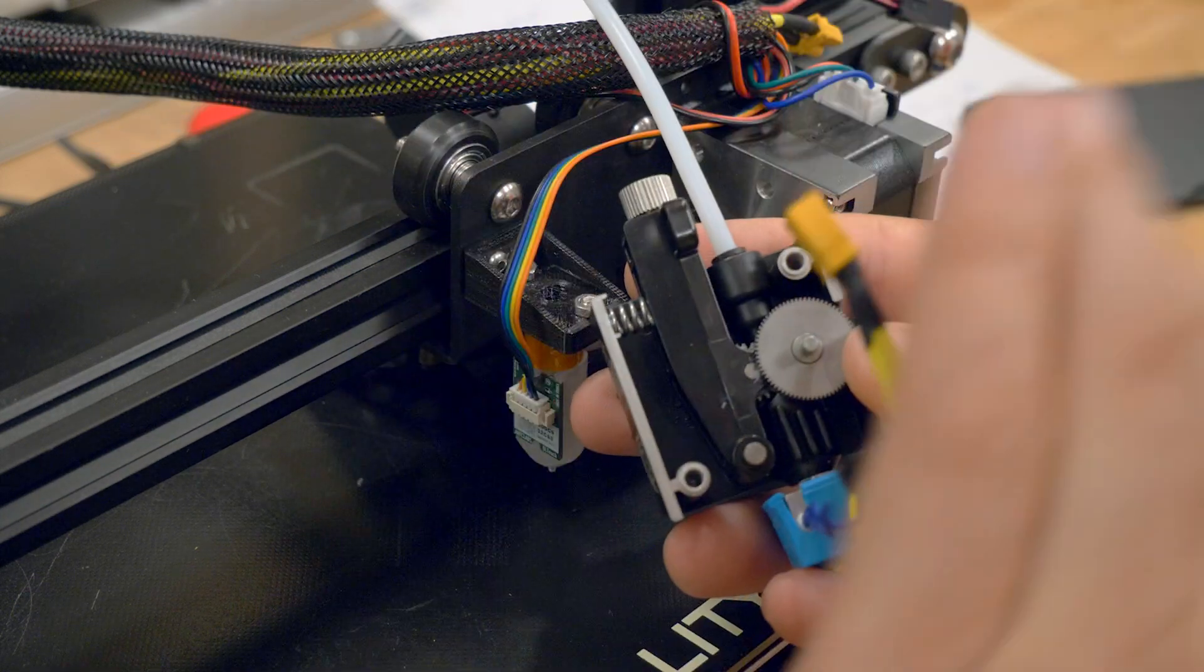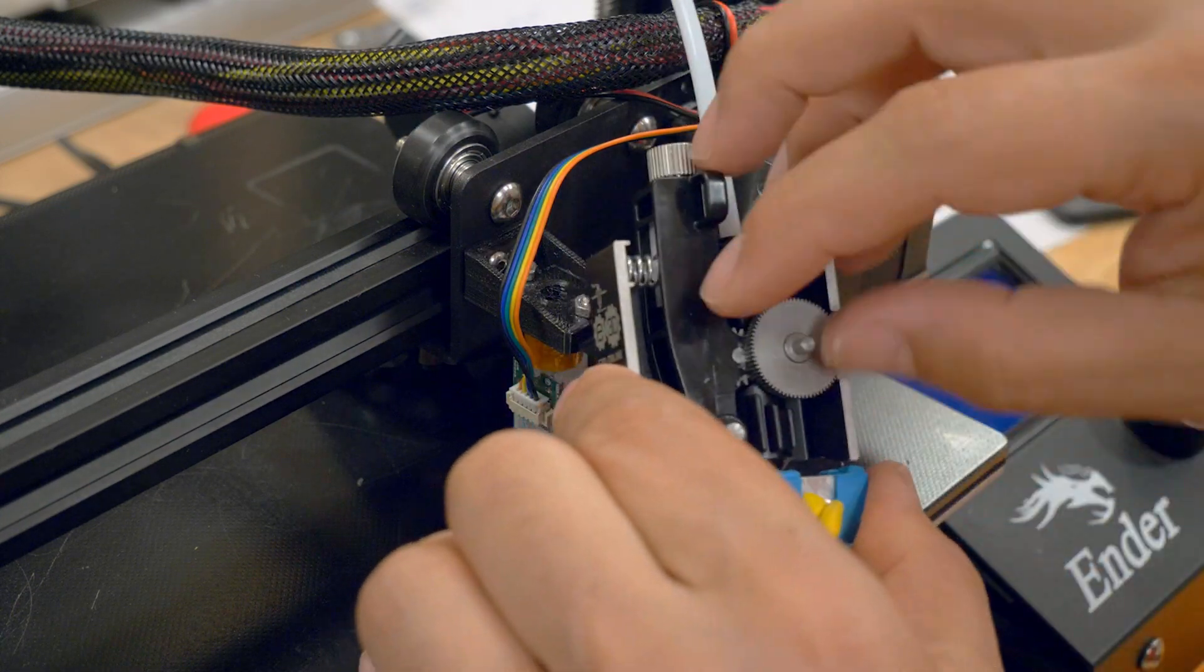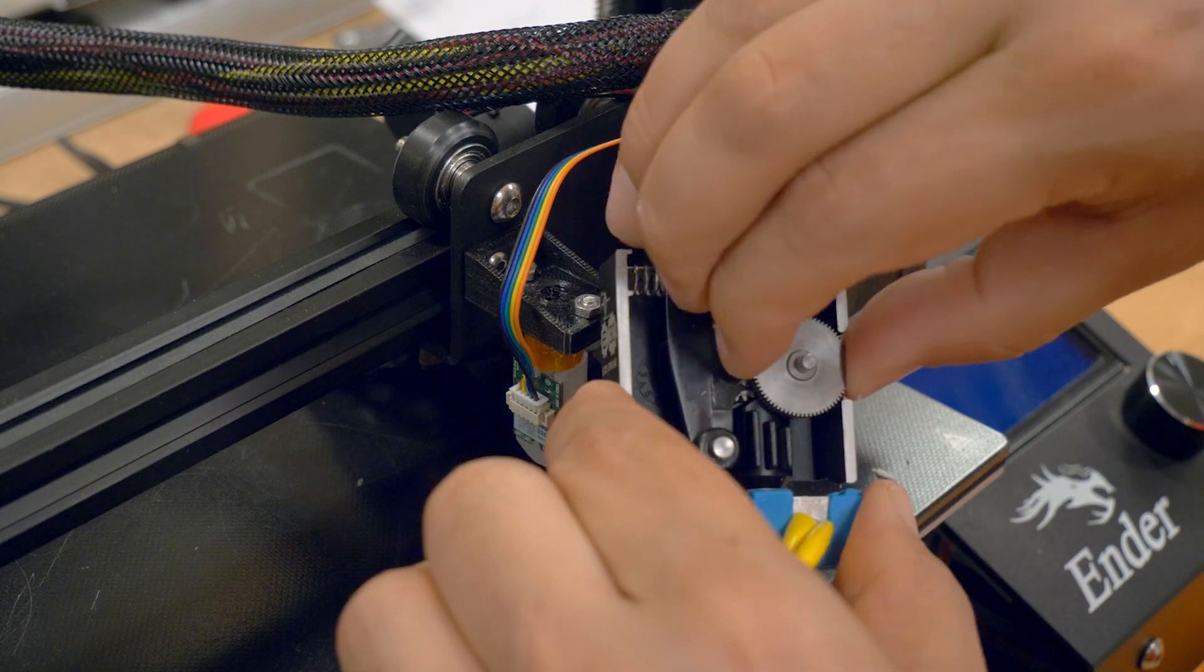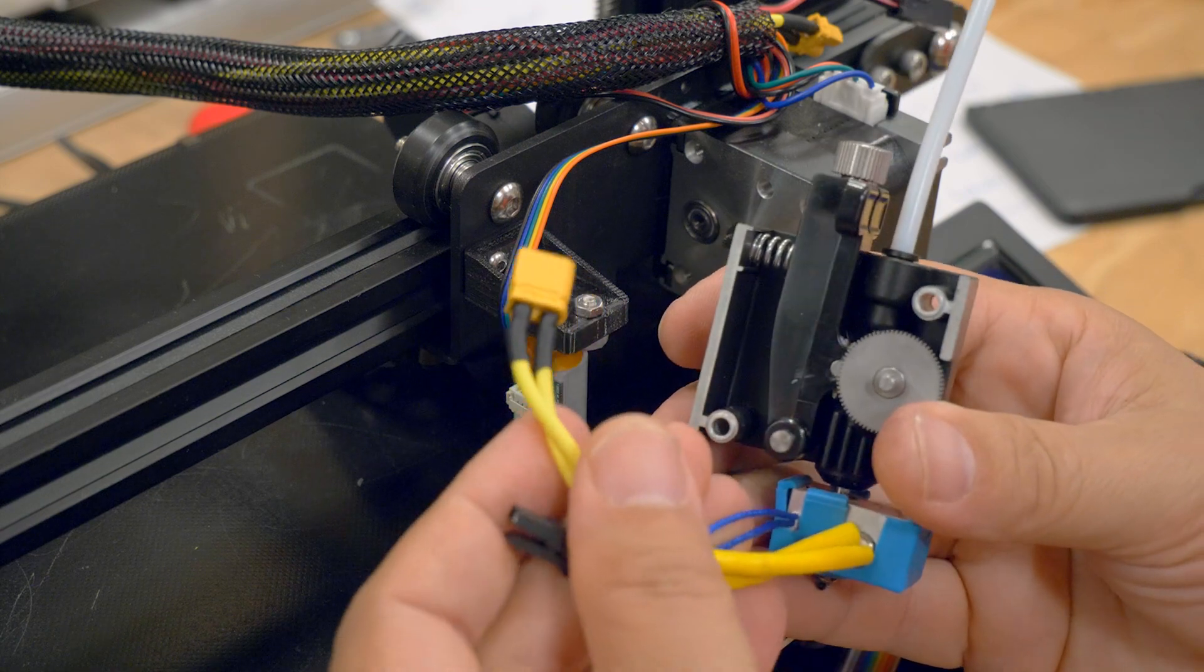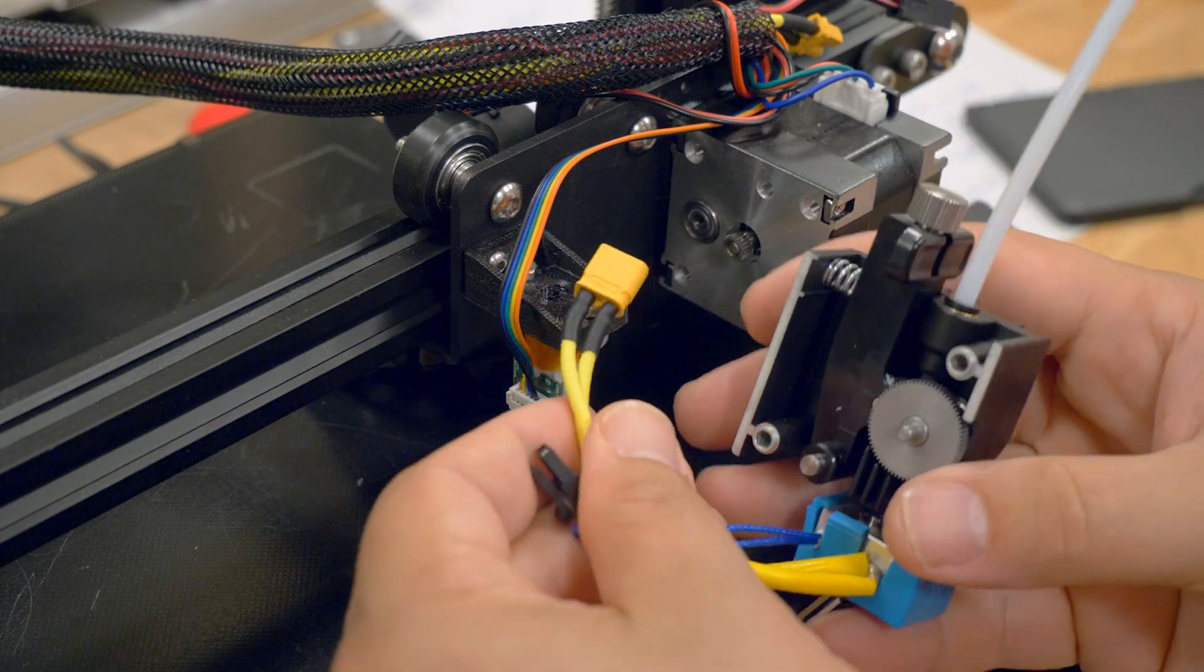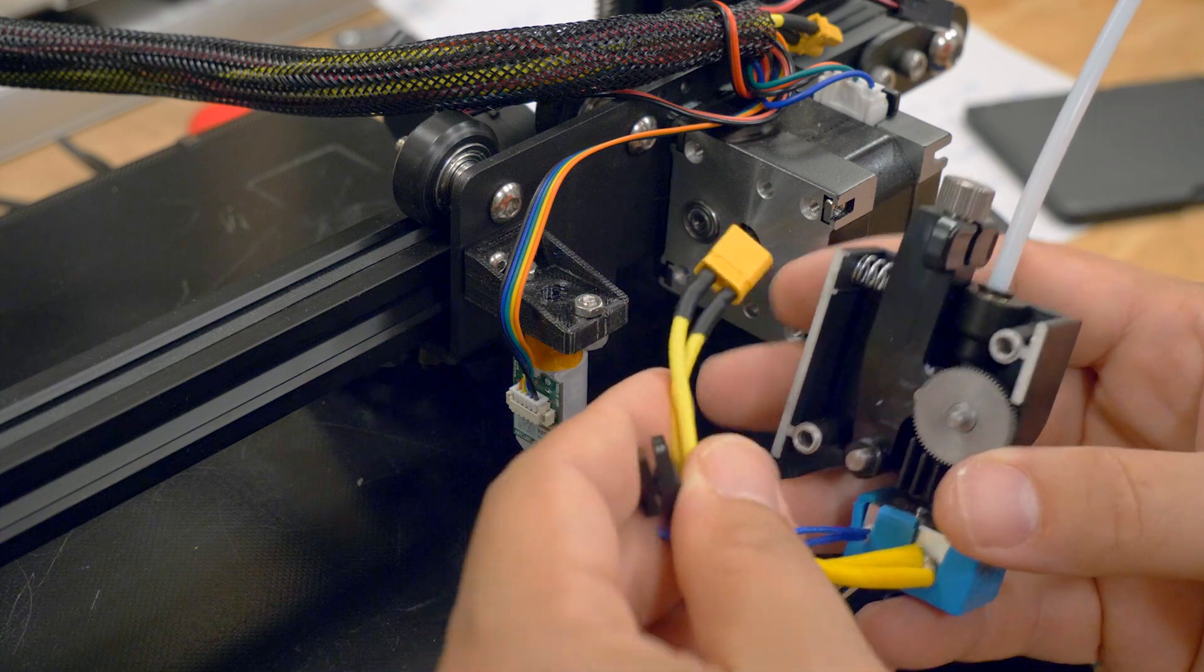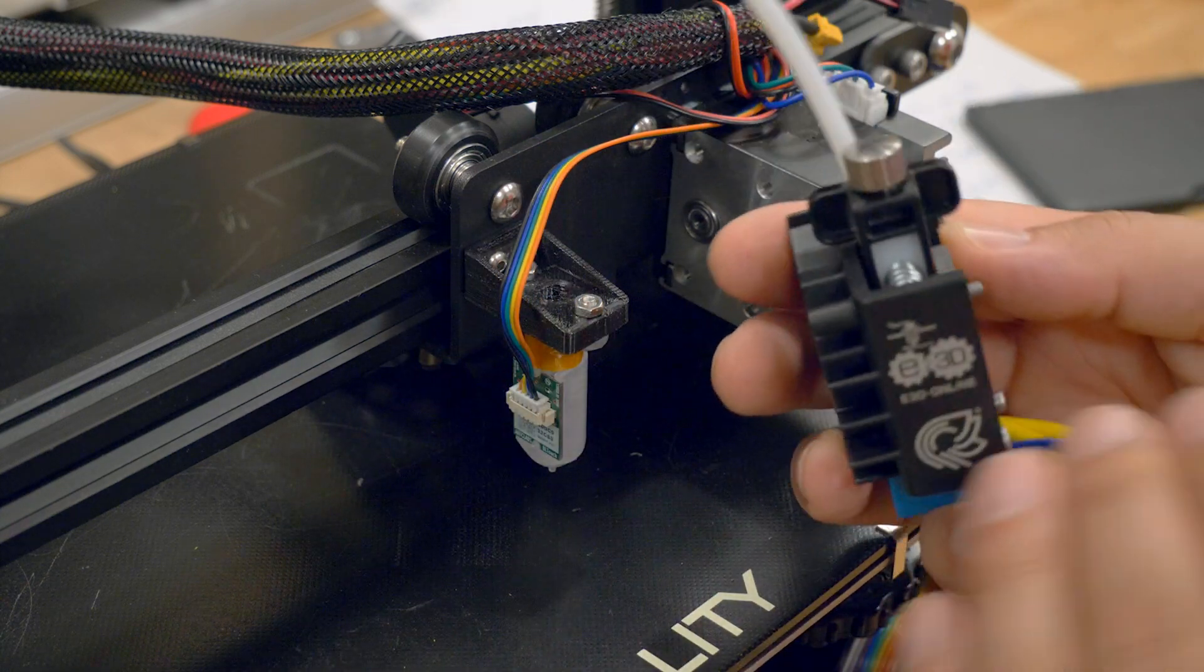But at this point, you are into your extruder assembly and you can start to pull things out and see where the jam is. And you can see why it's super helpful to have the heater cartridge and the temperature sensor be disconnectable because this whole thing just comes out and you're not tugging on them.